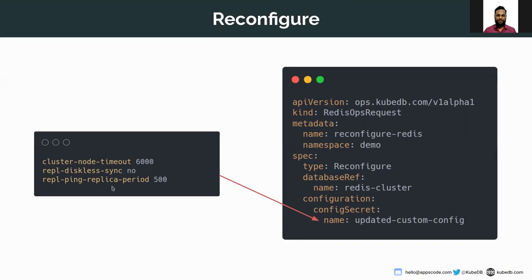Replica-timeout of 500 means that when a master is not responding to the ping of a replica for 500 milliseconds, the replica will consider the master dead and start a failover election. Using this configuration I created a secret named 'updated-custom-config', and using that secret we will update our database.